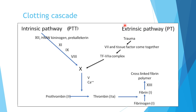To summarize: the extrinsic pathway is measured by PT (now expressed as INR) and the intrinsic pathway is measured by PTT. Both converge on the common pathway, which starts with factor 10 becoming active factor 10, then converting factor 2 (prothrombin) to active factor 2 (thrombin), which converts fibrinogen to fibrin. With the help of factor 13, this becomes the blood clot — the cross-linked fibrin polymer.